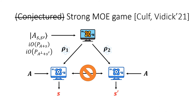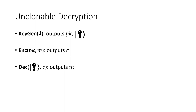I will now show the idea of constructing unclonable decryption from strong monogamy of entanglement of coset states. An unclonable decryption scheme is almost the same as a public key encryption scheme, except the secret key is now a quantum key. It should satisfy standard correctness and CPA security. Besides, it should also satisfy unclonability of the decryption key, which roughly says the quantum key cannot be split into two copies where both forged keys can be used to decrypt ciphertext.